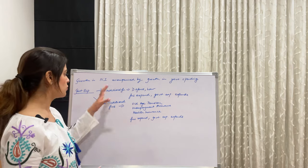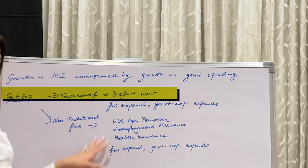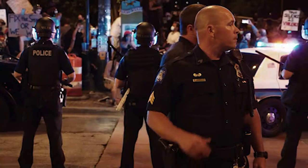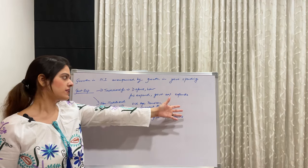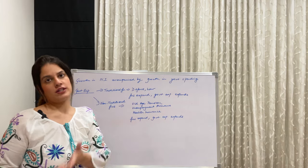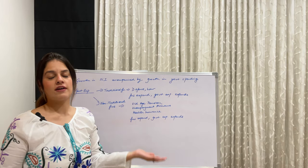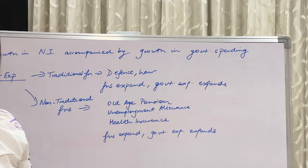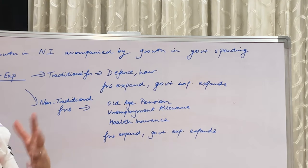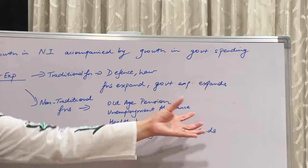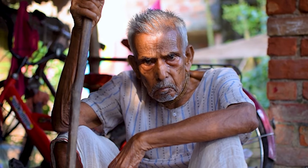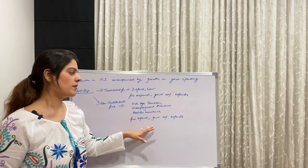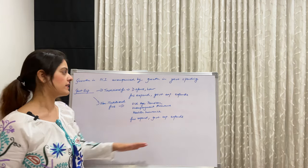We divide government expenditure into traditional and non-traditional functions. Traditional functions include defense and law — as these functions expand, government expenditure expands. Non-traditional functions include health insurance, unemployment allowances, and old-age pensions. As these non-traditional functions expand, government expenditure also expands.